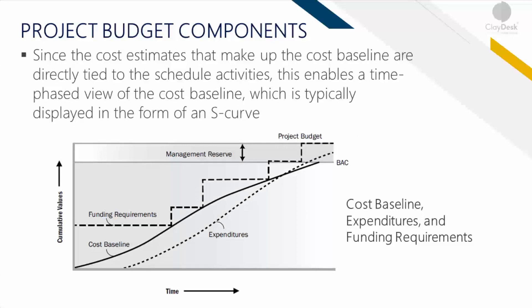Here are the budget components. Since the cost estimates that make up the baseline are directly tied to all tasks, subtasks, and activities, this enables a time-phased view of the baseline, which typically looks like an S-curve. Cost based on expenditures and funding requirements are listed on a graph — cumulative value on the Y-axis and time on the X-axis. As time progresses, your funding requirements increase based on the total budget.